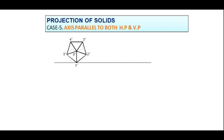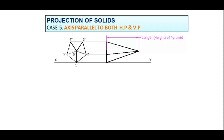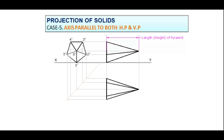To draw the elevation, project all the corners and apex point. Maintain the length of the pyramid on the axis of the elevation and join all the base points to the apex point. To draw the plan, draw a mitre line. Project all the corners and apex point towards the mitre line, then project horizontally from the mitre line. Draw the base and maintain the length of the plan same as that of the elevation. Join all the base corners to the apex point and draw the invisible lines as dotted lines.